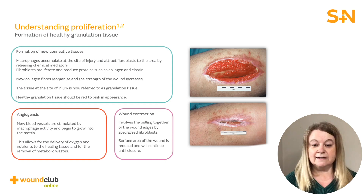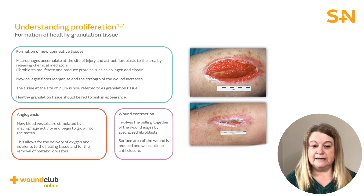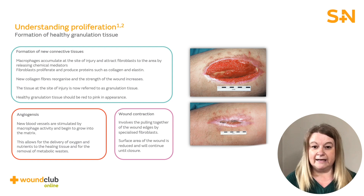The proliferative phase is about rebuilding new granulation tissue. New tissue is regenerated and constructed by fibroblasts, the cells responsible for the development of new blood vessels, collagen and other connective tissue. It is at this stage of the process that new collagen fibres start to reorganise and the strength of the wound increases. The tissue is now referred to as granulation tissue and should be red to pink in appearance. It is important to remember that collagen synthesis is dependent on the presence of vitamin C, iron and copper. If there is a deficiency of these substances, satisfactory wound healing is not possible.